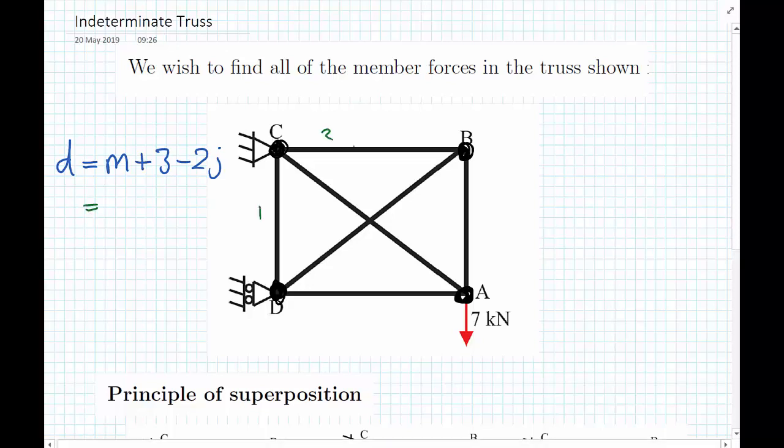In this case we have the number of members is one, two, three, four, five, six, plus the three equations minus two times the number of joints. So we have one, two, three, four joints. Two times four is eight, so we have nine minus eight which equals one. So we're indeterminate by degree one. We have one unknown force that we cannot find due to statics alone.